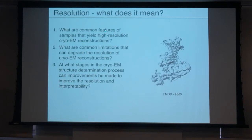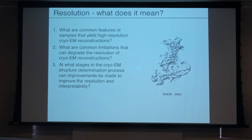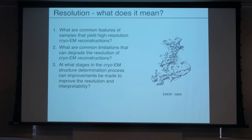So — resolution, what does it mean? What are some of the common features of very high resolution reconstructions? What are the common limitations that degrade resolution? And at what stages of the cryo-EM structure determination process can we make improvements? This is a recent EMDB deposition of a GPCR complex with arrestin — a fairly low resolution structure, around 4.5 angstroms. But because it's the first time anyone has been able to resolve how a GPCR interacts with an arrestin, this is a high-profile paper. They have structures of all the pieces, so they can start to understand how this works, and using protein biochemistry and other tools they could interpret the interaction and do functional studies to test their hypotheses.